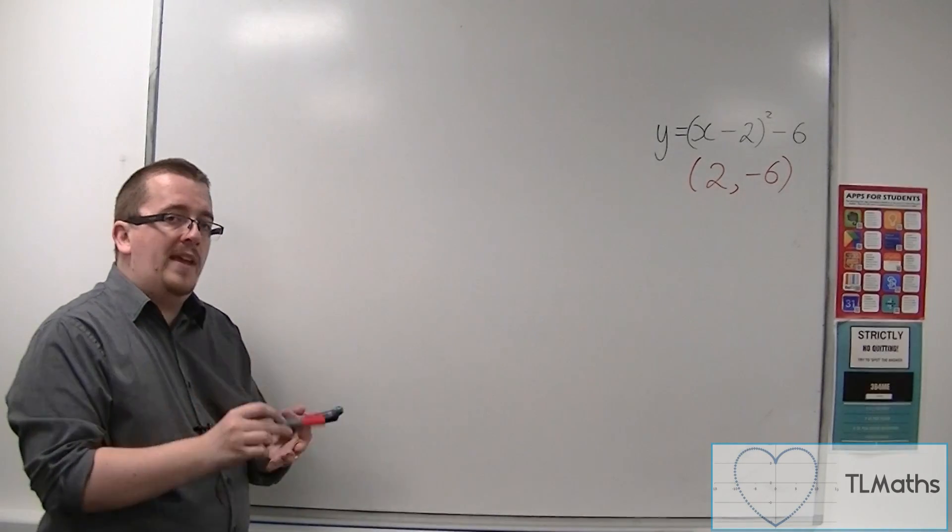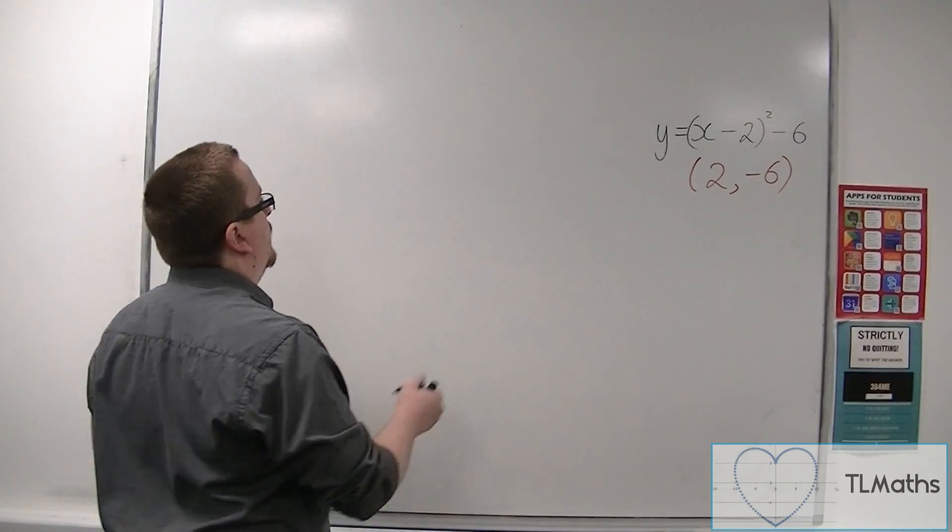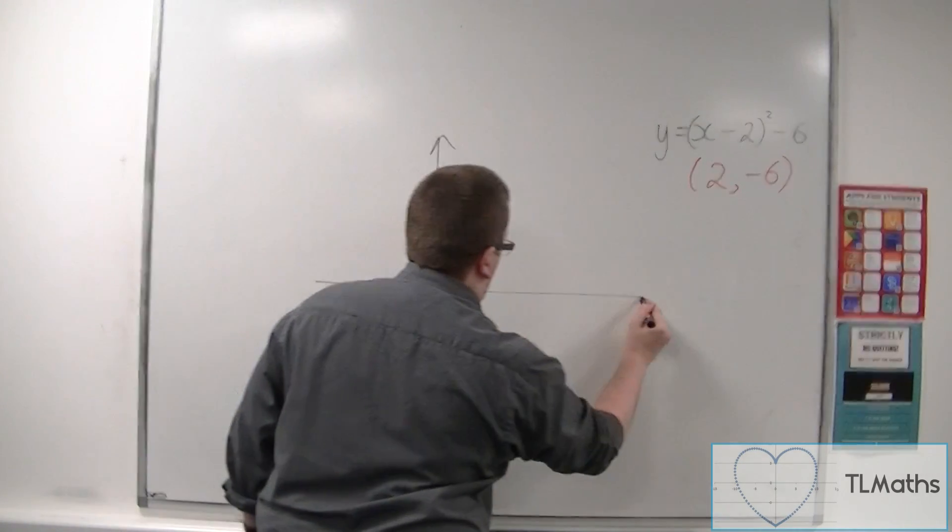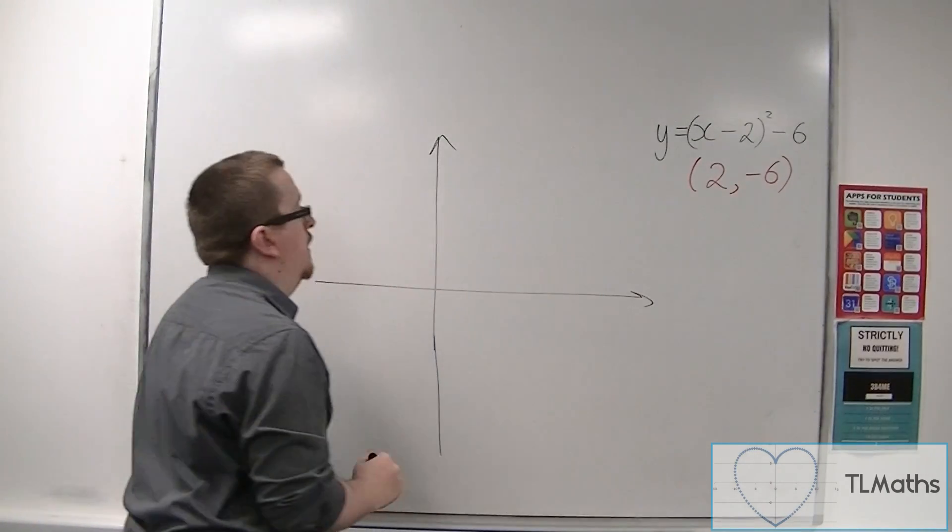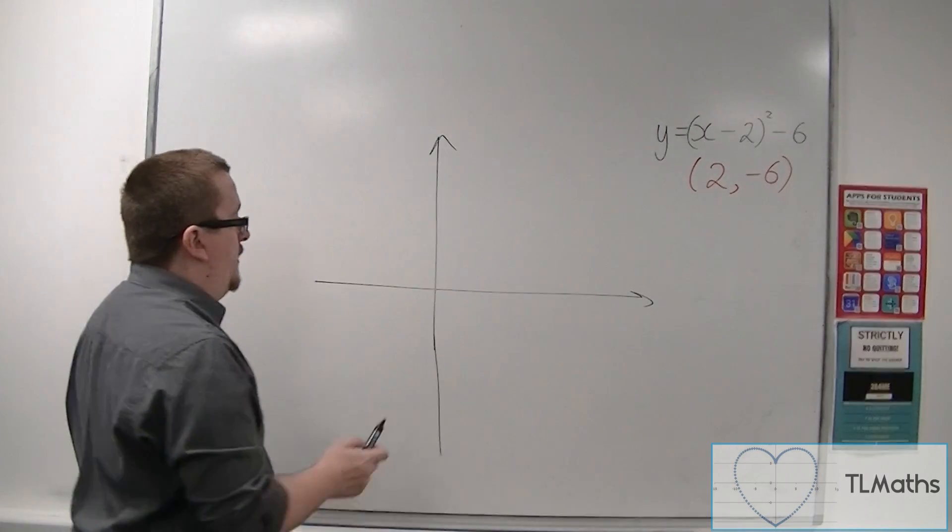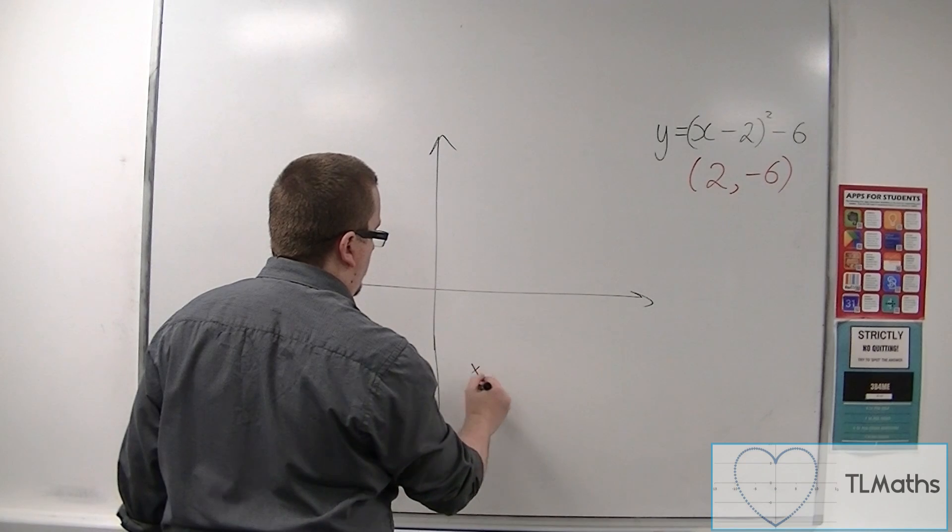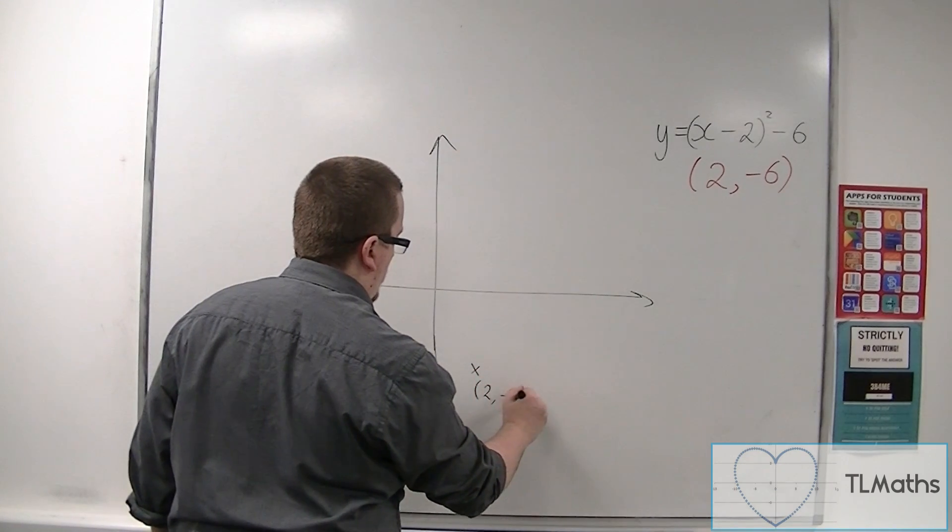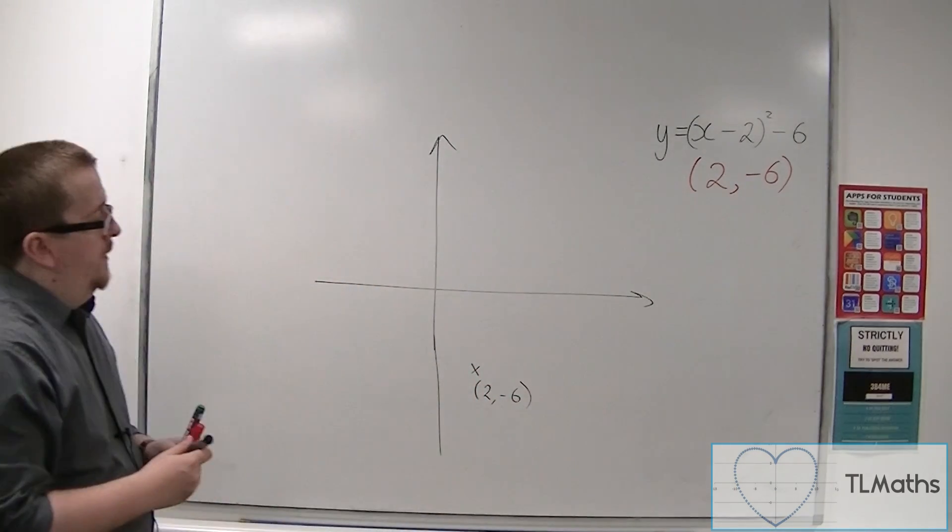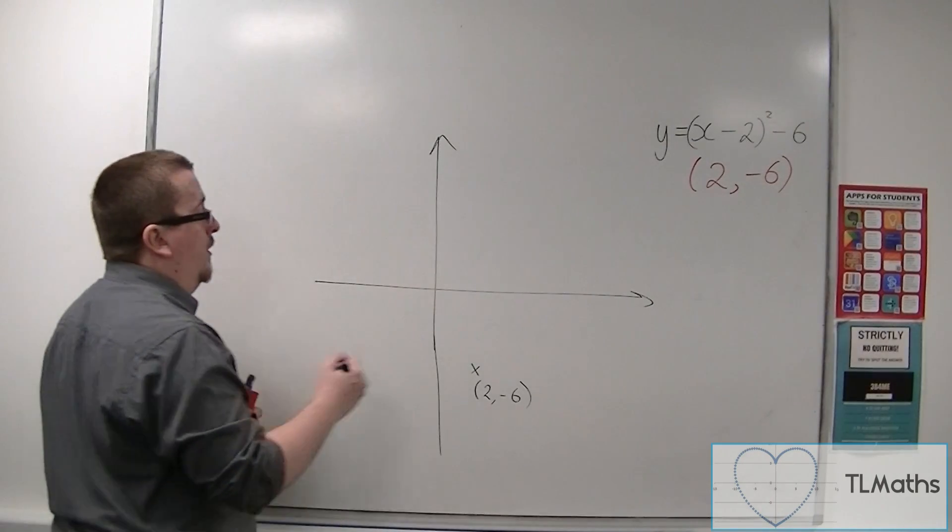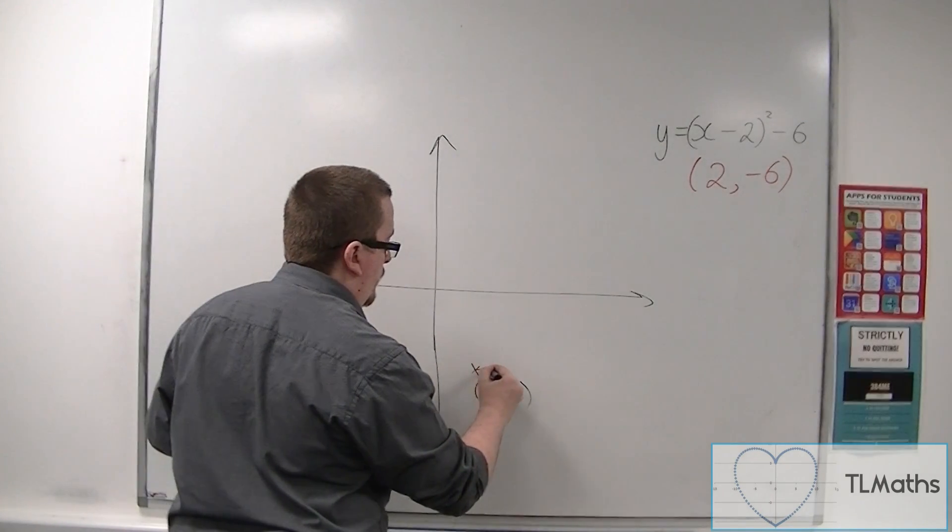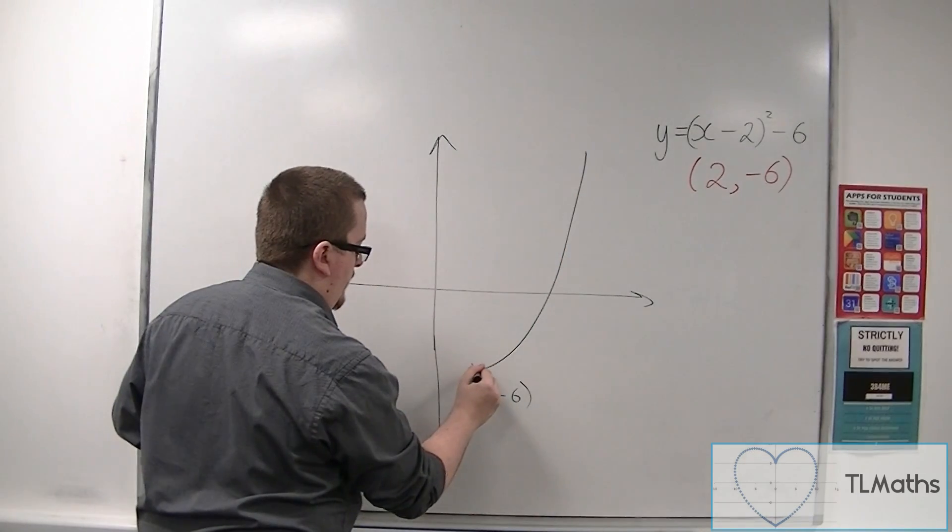So let's sketch this curve. So 2 minus 6 would be somewhere down here. Now the parabola will look something like this.